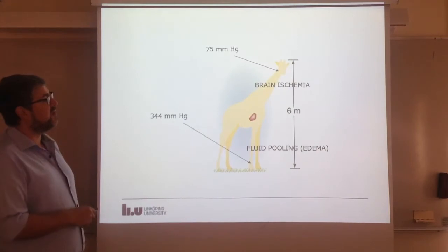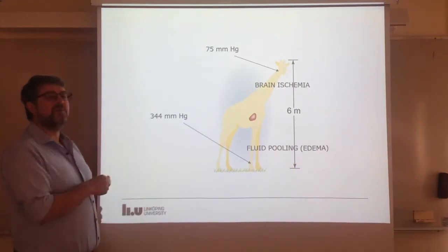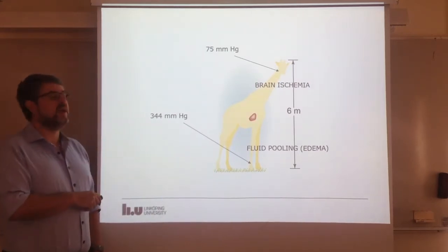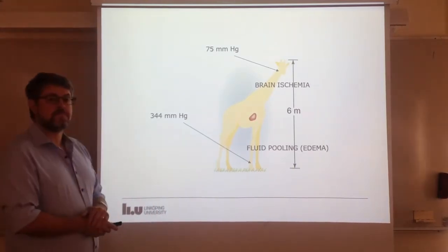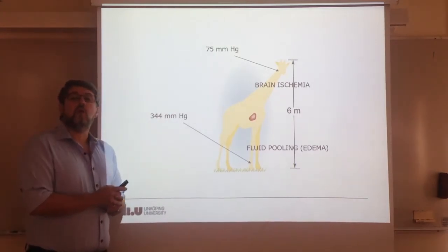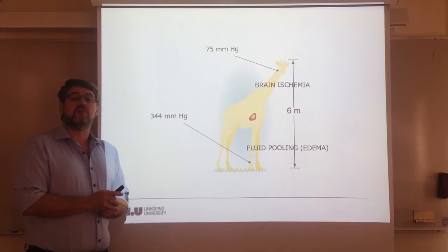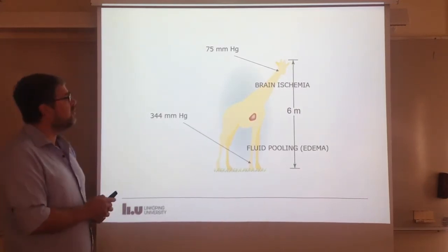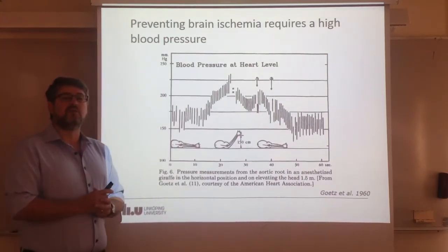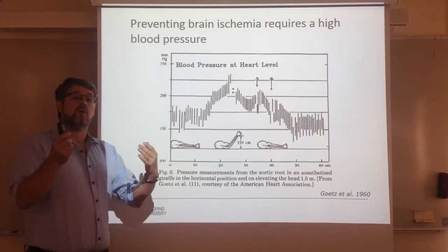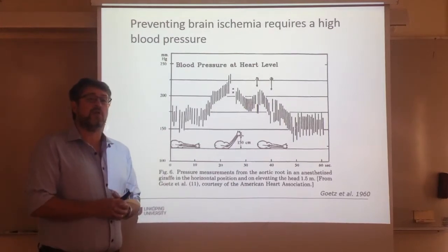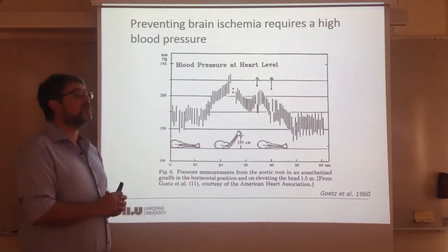For an adult giraffe 6 meters tall, the potential problems due to gravity are: brain ischemia because of low pressure at the base of the brain, excessive pressure in the feet, and fluid pooling or edema. This topic has been of high interest for researchers for many years. The first measurements of blood pressure in giraffes were done back in the 1960s, with the technology available at the time, which allowed quite a few things but not everything we could do today.